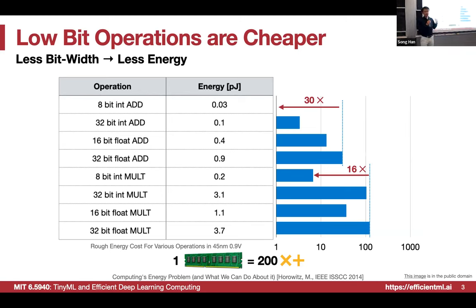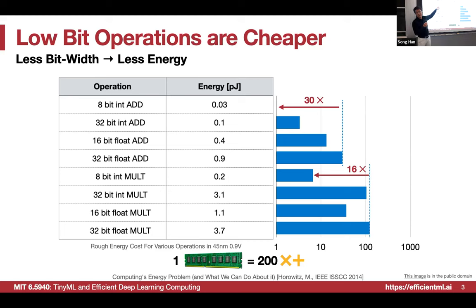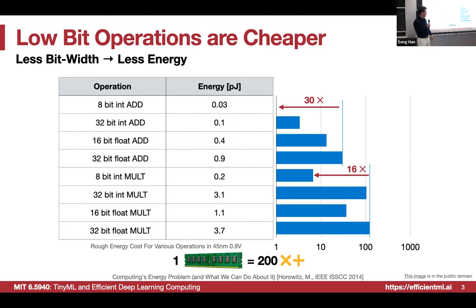The motivation for quantization: we want to make storage cheaper, memory references cheaper, and arithmetic cheaper. Storage is straightforward — it's number of bits per parameter times number of parameters. For operations, consider 8-bit versus 32-bit addition: the energy decreases linearly with the number of bits. For multiplication from 8-bit to 32-bit — is it O(n) or O(n²)?